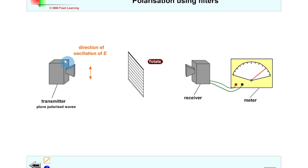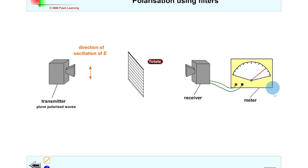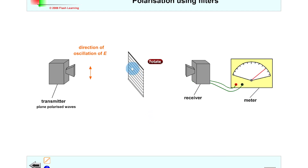Now a quick simulation to show polarization with microwaves. In this setup we've got a microwave transmitter emitting plane polarized waves towards a polarizing grill made up of metal wires, and then a microwave receiver attached to a meter — like an ammeter. Right now we're getting a strong signal in the meter, indicating a strong microwave signal being detected.